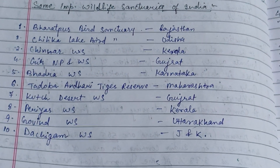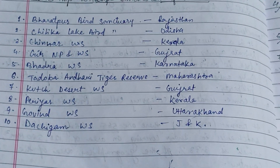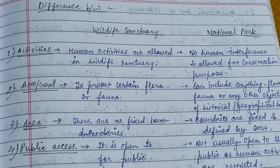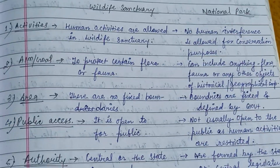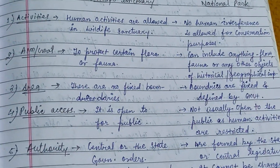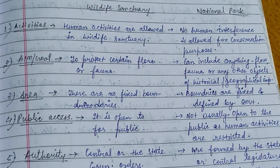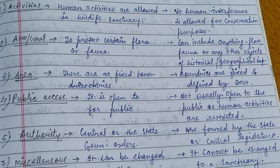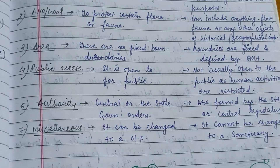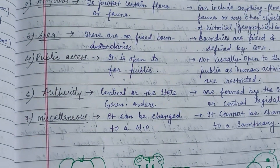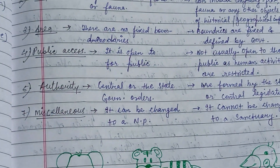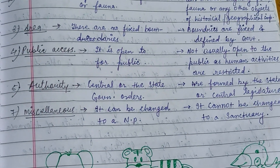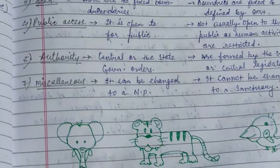So some important wildlife sanctuaries of India are as follows. There are some differences between wildlife sanctuaries and National Parks. Human activities are allowed in the wildlife sanctuary, while no human interference is allowed for conservation purposes in the National Park. There are no defined boundaries in sanctuaries, whereas the boundaries are fixed and defined by the government in the case of National Parks.